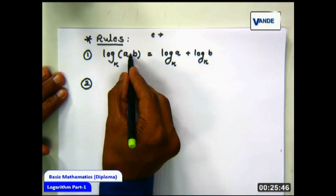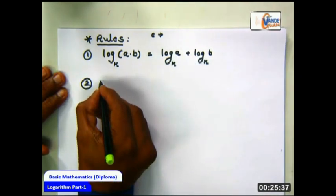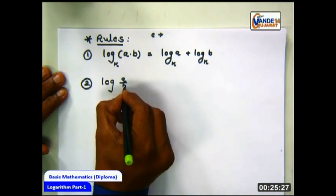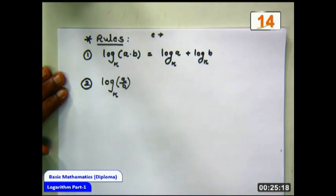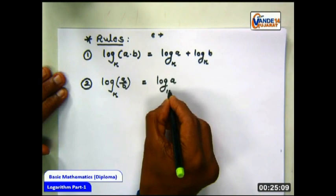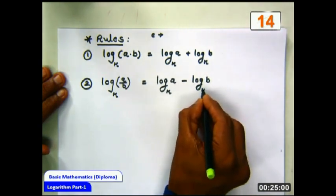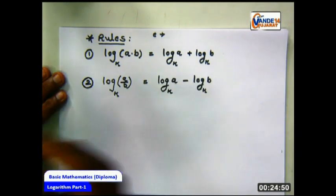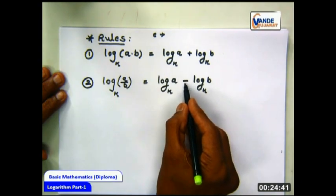Let us proceed to one more rule. Log of A divided by B, to the same base k, equals the logarithm of A minus the logarithm of B, for whatever base is given. So when there is a division of numbers, you find subtraction on the right-hand side.